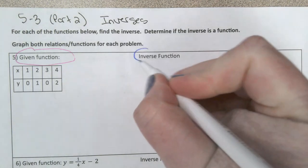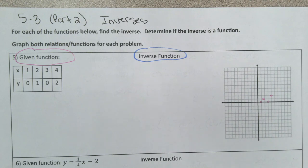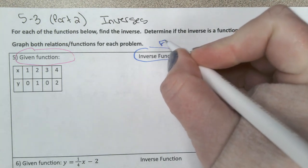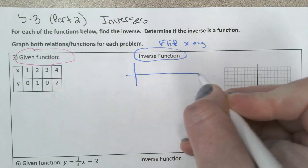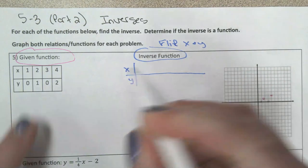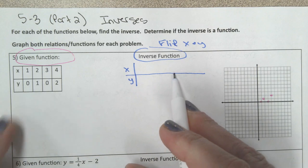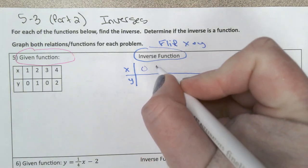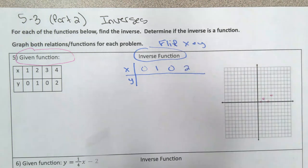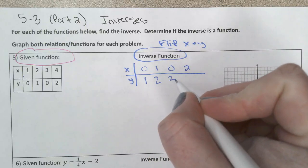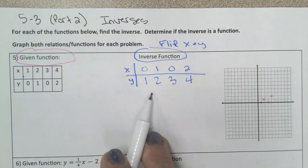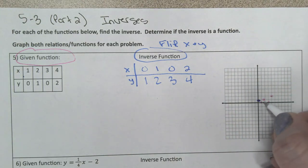For our inverse, you have to recall that what we said earlier, to find the inverse all you have to do is flip your x and y. So I'm going to make a table of values, and all these y's are going to move up here and become my x's. So I have 0, 1, 0, 2. All these x's flip and they become my y's: 1, 2, 3, 4. I'm going to plot these points: 0, 1, 1, 2, 0, 3, and 2, 4.